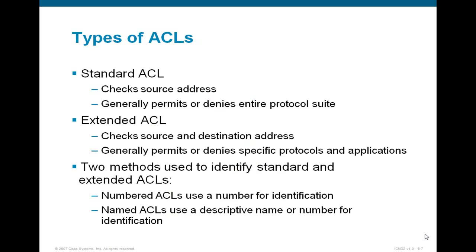There are two major types of access list: standard access list and extended access list. The standard access list checks the source IP addresses, and once matched, applies a permit or deny to the whole IP packet. The extended access list performs a more granular check on source IP addresses as well as destination addresses, and also checks other protocol specifications such as port number and IP protocol applications. These two methods are used to define filtering policies. Access lists can be identified as standard or extended based on either a number or a name.